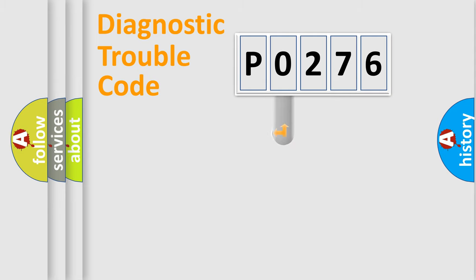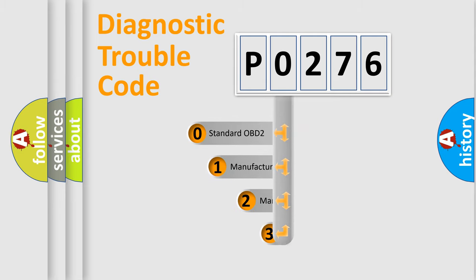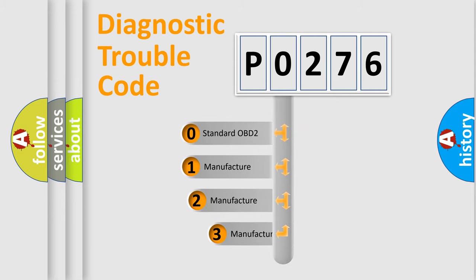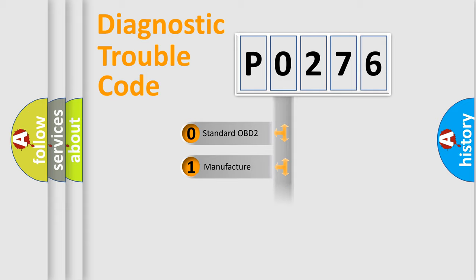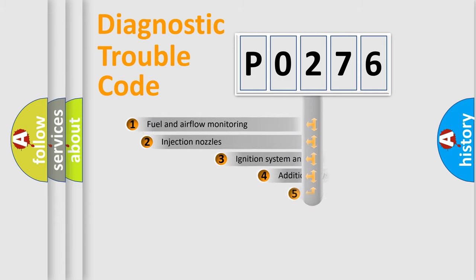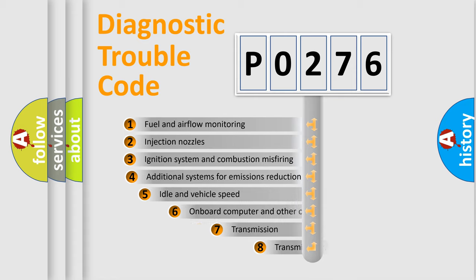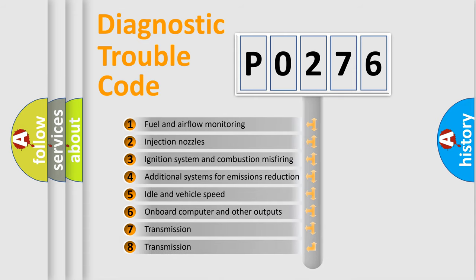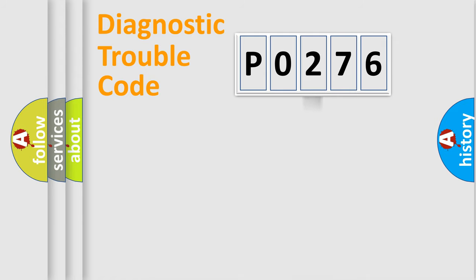This distribution is defined in the first character of the code. If the second character is expressed as zero, it is a standardized error. In the case of numbers 1, 2, or 3, it is a more specific expression of a car-specific error. The third character specifies a subset of errors. The distribution shown is valid only for the standardized DTC code.